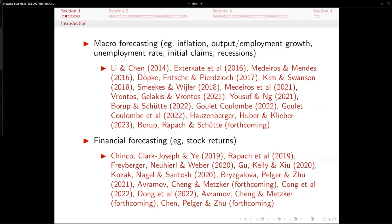Some recent examples in macro forecasting — and this is just a partial list — include applications with inflation forecasting, output, employment growth, unemployment rate, initial claims, and recession. Financial forecasting is also becoming quite popular, especially with respect to stock returns both at the aggregate level and at the individual stock level, and also bond returns with machine learning. This literature is constantly growing.